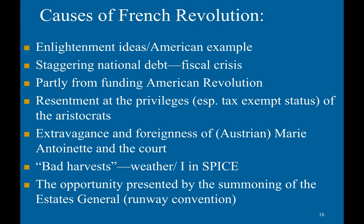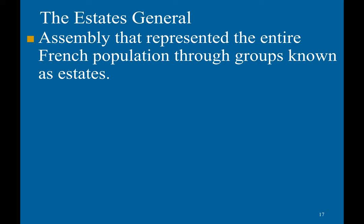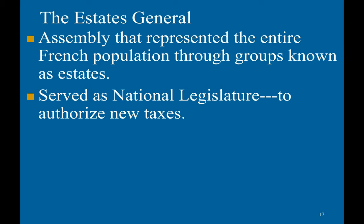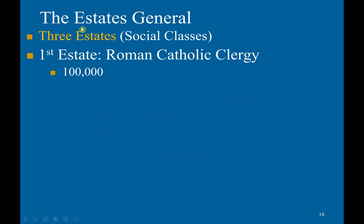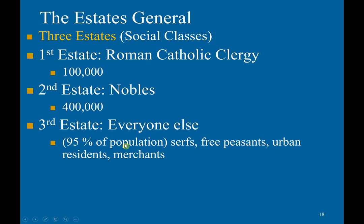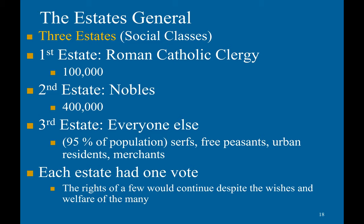The opportunity presented itself through the Assembly of the Estates General — an assembly representing the entire population through groups known as estates, essentially the national legislature called to authorize new taxes. It hadn't met for about 150 years. There are three estates: the first estate, comprising the Roman Catholic clergy numbering 100,000; the second estate, nobles, with 400,000; and the third estate — everyone else — basically 95% of the population, including serfs, free peasants, urban residents, and merchants. Each estate had one vote, so the first and second estates could block any motion by the third through block voting, since they had two-thirds of the vote.